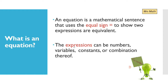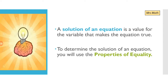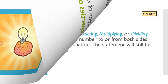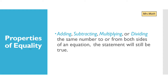What is an expression? An expression can be numbers, variables, constants, or combinations thereof. A solution of an equation is a value for the variable that makes the equation true. To determine the solution of an equation, you will use the properties of equality. The properties of equality are adding, subtracting, multiplying, or dividing the same number to or from both sides of an equation.